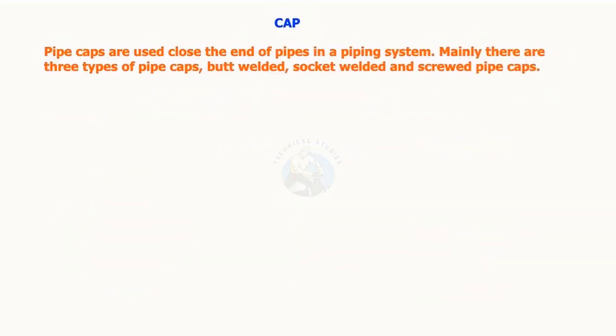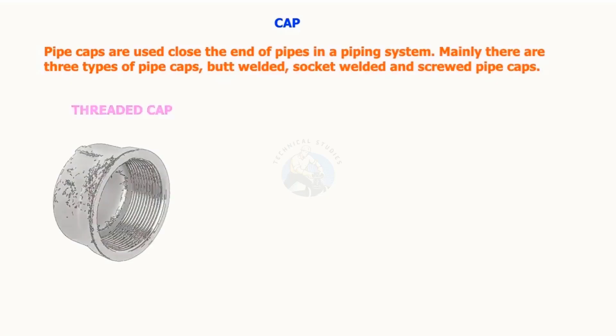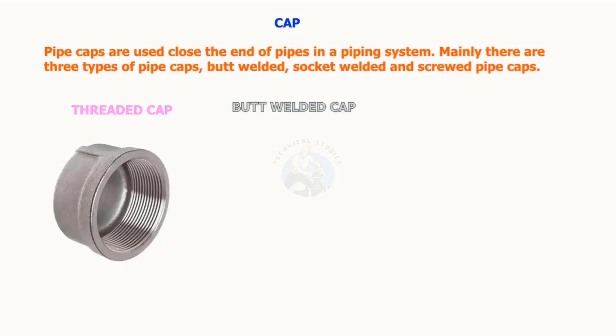Pipe caps are used to close the end of pipes in a piping system. Mainly there are three types of pipe caps: butt welded, socket welded, and screwed pipe caps.